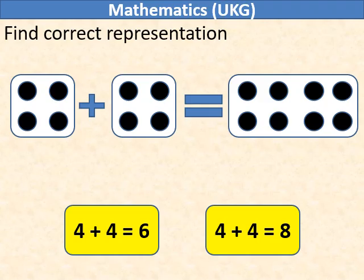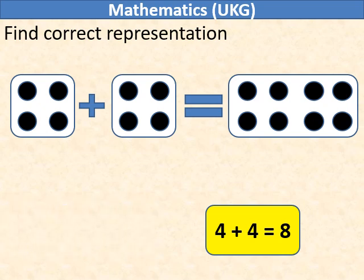Find correct representation of the picture. In the first dice, we have four dots. We add one more dice to it which has again four dots. So, in total, we have eight dots. So, the correct representation is 4 plus 4 is equal to 8.